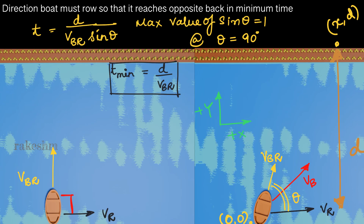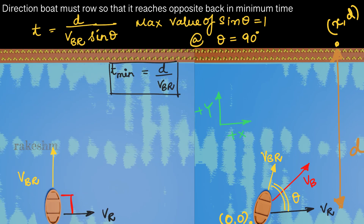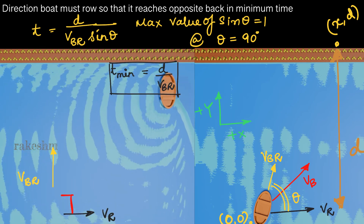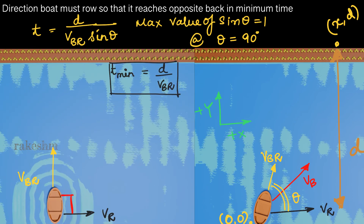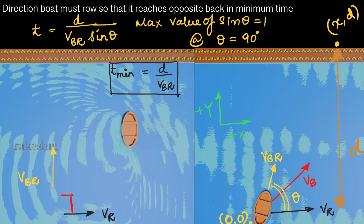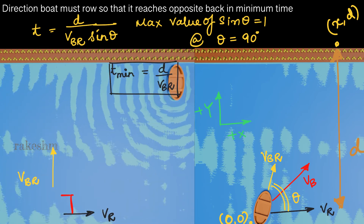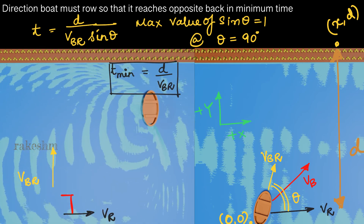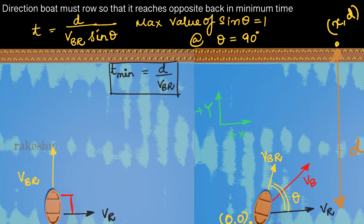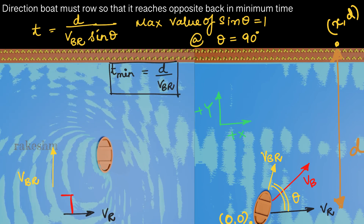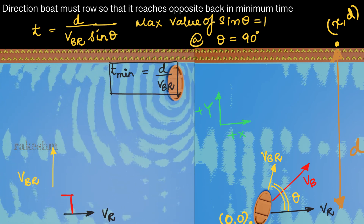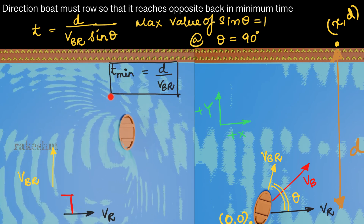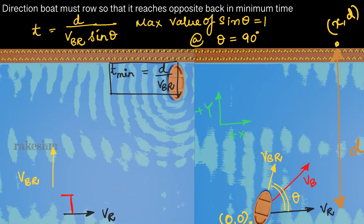Let us have a look at the schematic for the minimum time condition. The boatman is rowing in this direction and the river is pushing him sideways, so he reaches somewhere downstream on the opposite bank. If you are in a boat crossing a flowing river and you want to cross in the least time, you must always point the boat exactly towards the opposite bank.